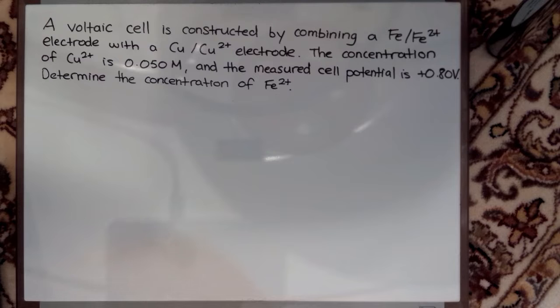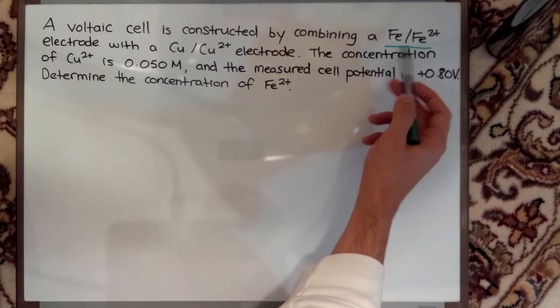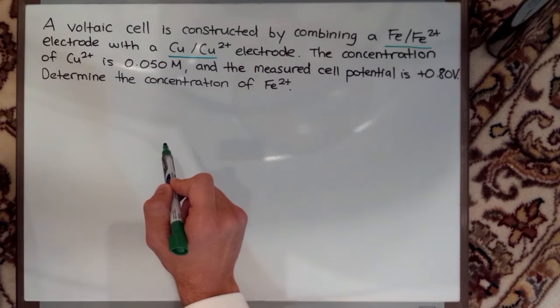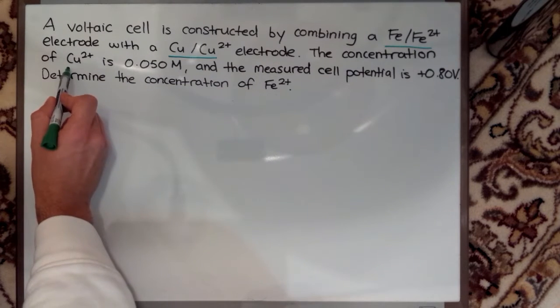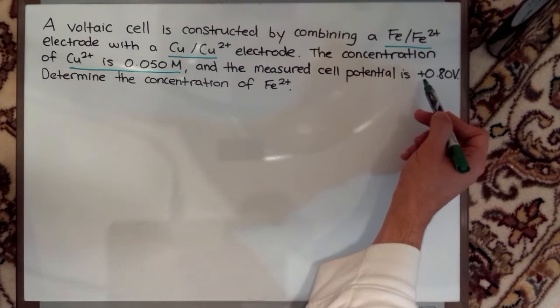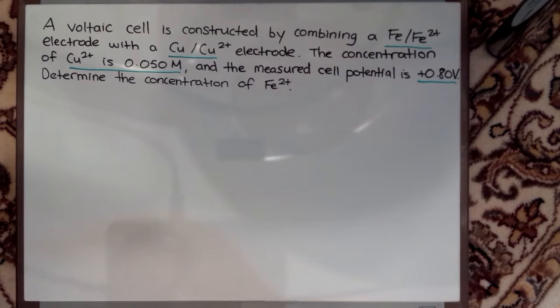The most important information given in this question is my Fe/Fe2+ electrode, I have a Cu2+ electrode, I have a concentration that's given to me and I have a cell potential that's given to me. So the first thing I will do is write out the possible reactions that are happening at my electrodes.